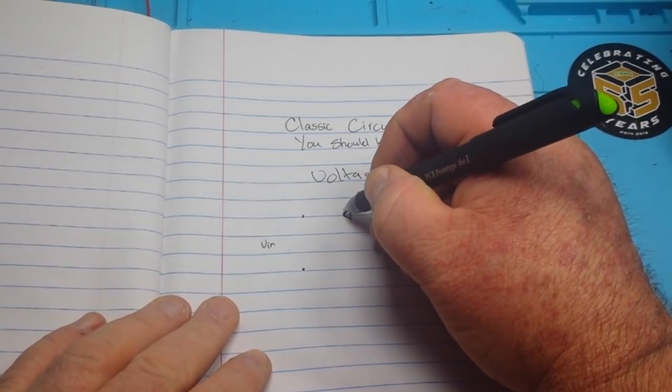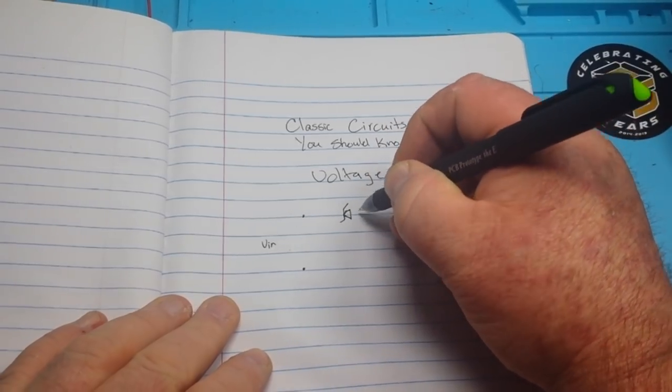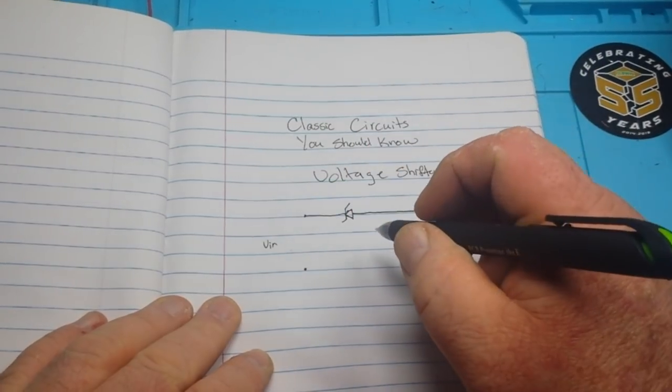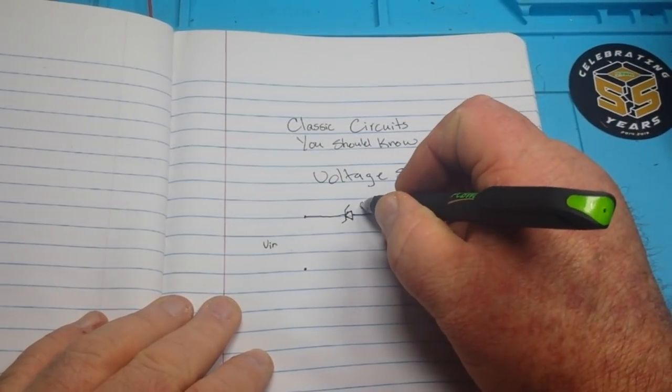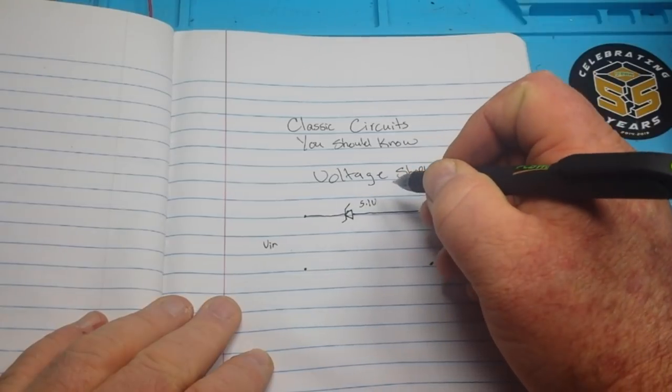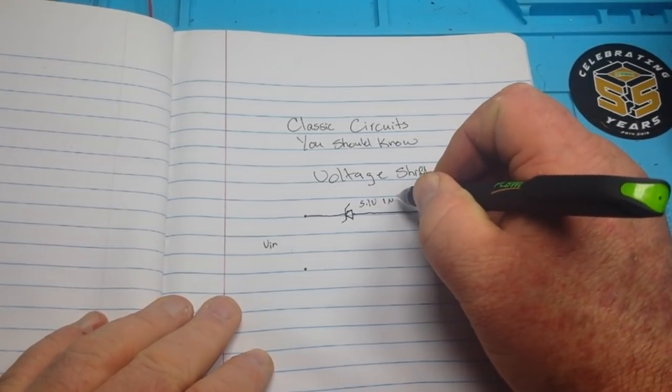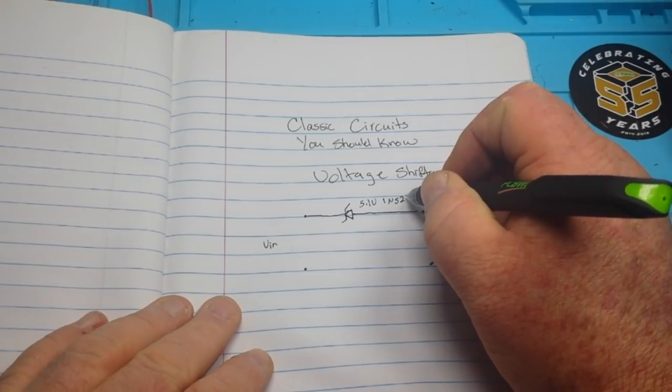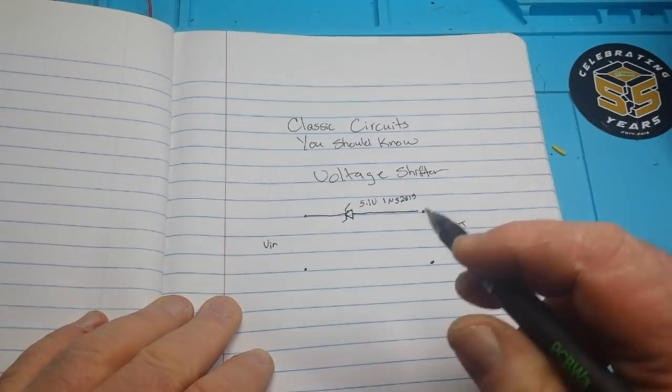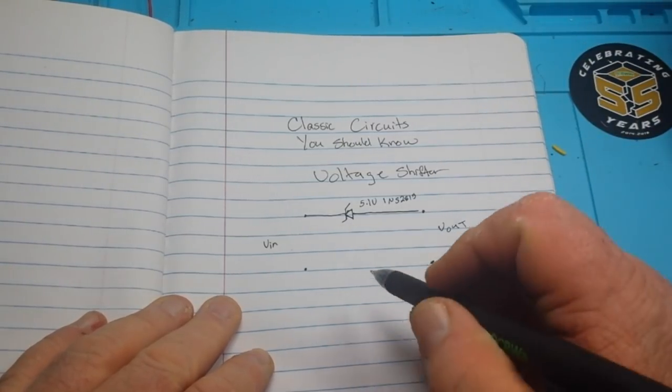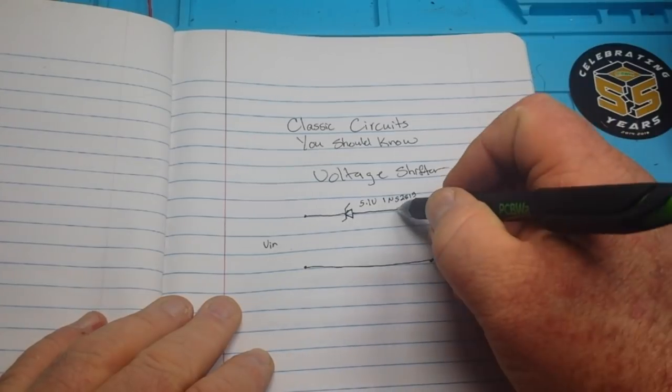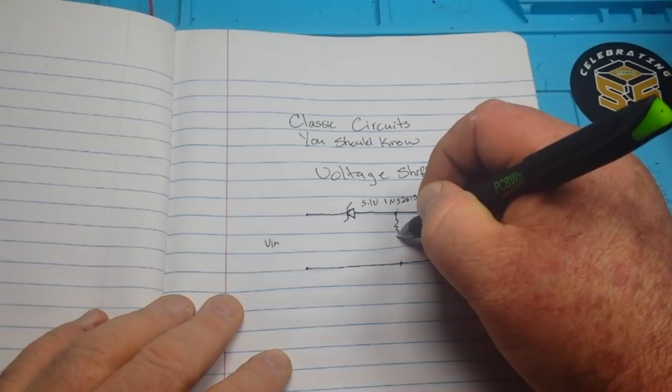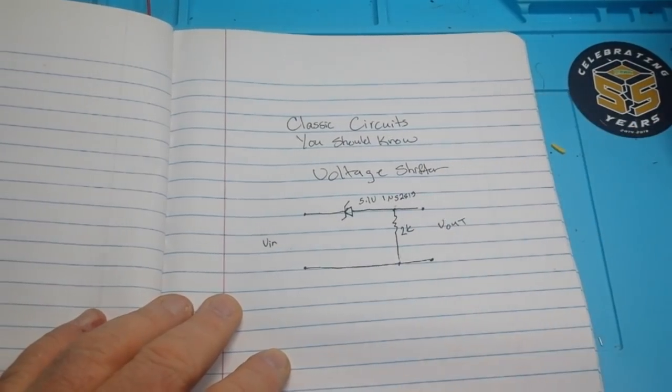...is a zener diode, just like that. In this case we're going to use a 5.1 volt, think that is the one in 5281B I think, don't quote me on that. Okay, and we'll just put a load resistor here.